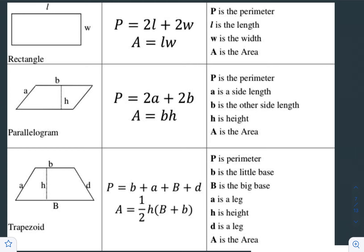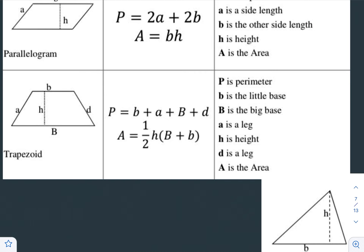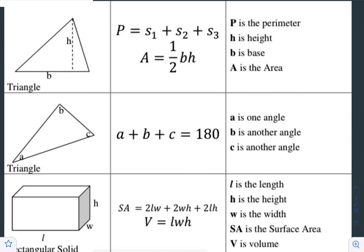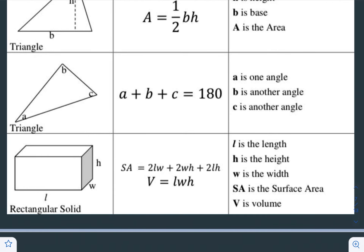In a parallelogram, the perimeter equals 2 times the side length plus 2 times the other side length, and the area equals the base times the height. In a trapezoid, the perimeter equals the little base plus the leg plus the big base plus a leg. The area equals half times the height times the big base plus the little base. In a triangle, the perimeter equals all of the sides together, and the area equals half times the base times height.